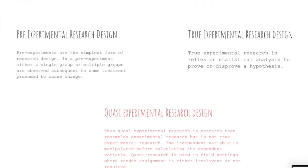And the third one is quasi-experimental research design. The quasi-experimental research design is research that resembles experimental research, but is not true-experimental research. The independent variable is manipulated before calculating the dependent variable. Quasi-experimental research is used in field settings where random assignment is either irrelevant or not required.